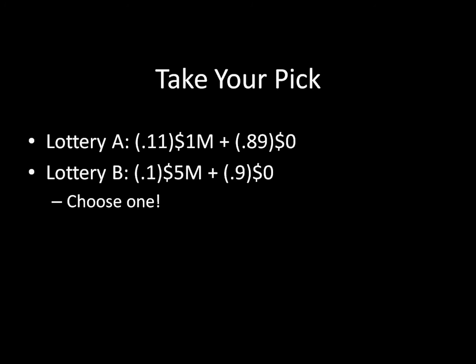Lottery A: 11% of the time pays you $1 million; the remaining 89% of the time it pays you nothing. Lottery B: 10% of the time pays you $5 million; 90% of the time it pays you nothing at all. I want you to pretend as though I actually had the money to do this and was actually going to pay you whichever lottery you chose. We can either play Lottery A or Lottery B — it's your pick.